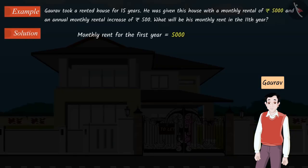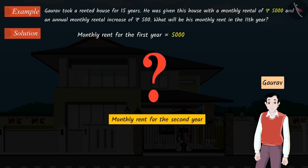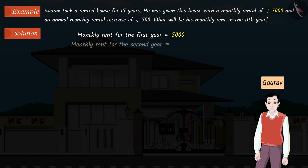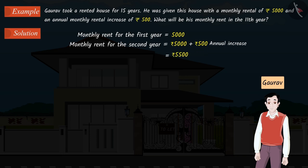The monthly rent for the first year will be Rs. 5,000. Can you find the monthly rent for the second year? It is very easy — we just have to add the annual increase to the monthly rent for the first year. Hence, the monthly rent for the second year will be Rs. 5,500.